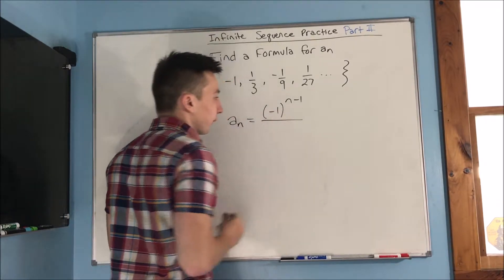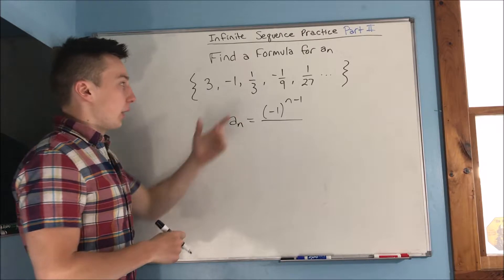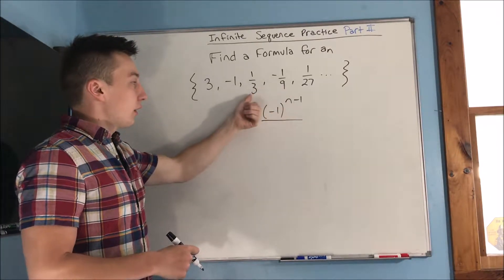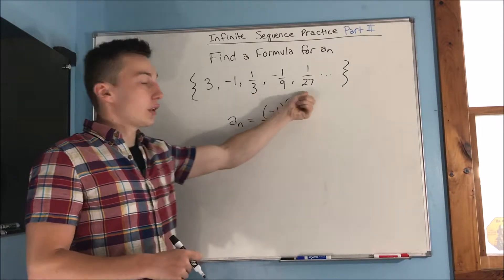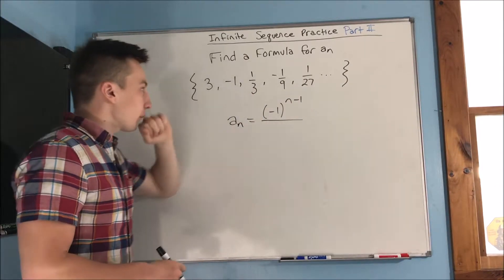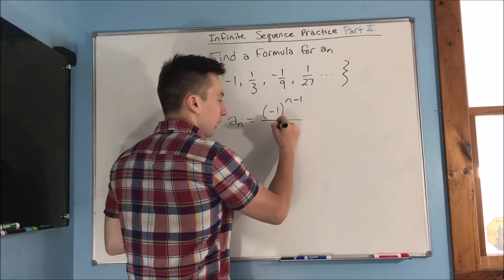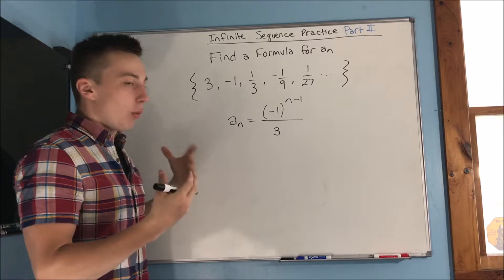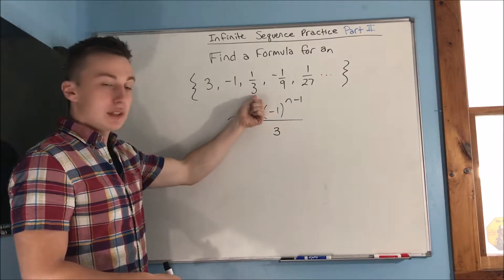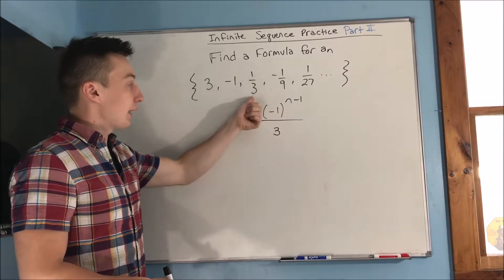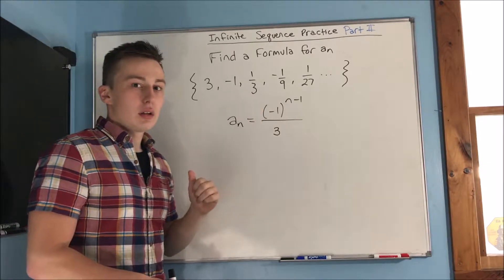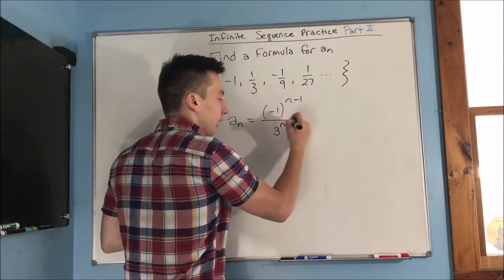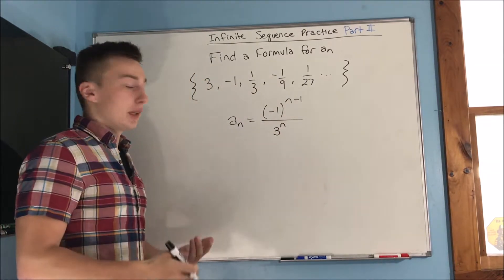And on the bottom here, you see a three, and that's being squared to get nine, and the three would be to the third to get 27. So at this point you're kind of thinking, well I need this three to be to a power, but what power is it supposed to be? Because this isn't the first term, this is the third term and that's just where we're getting a three. Well, what we have to do here is we can just adjust it by putting an n here and then adding or subtracting something.